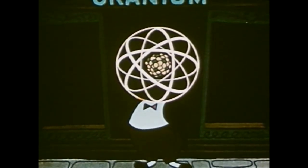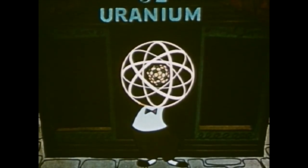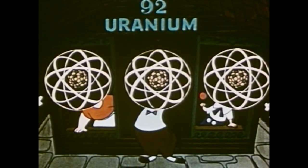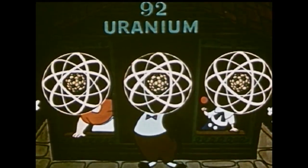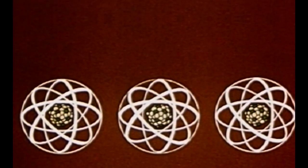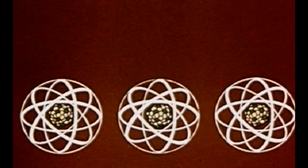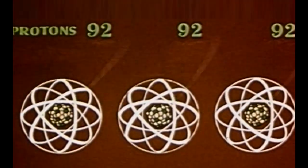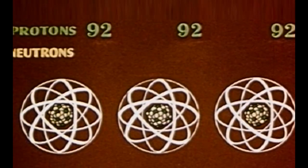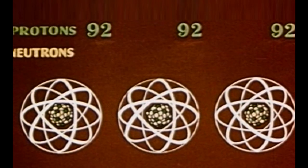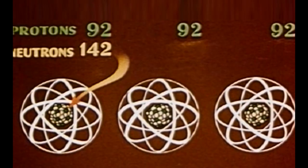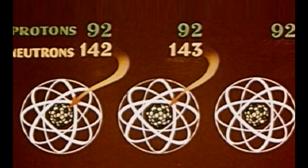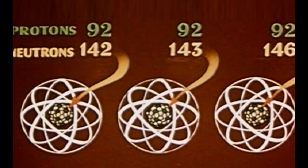For any given element, the number of protons must remain the same, but the number of neutrons may vary. The atomic weight of an atom is the number of protons plus the number of neutrons. Natural uranium may contain 142, 143, or 146 neutrons.